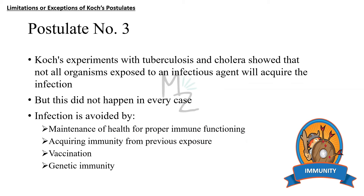Regarding postulate number three, Koch's experiments with tuberculosis and cholera showed that not all organisms exposed to an infectious agent will acquire the infection. Koch said that when a healthy individual is exposed to a pathogen isolated from culture, that individual will get the infection — but this did not happen in every case. The reason is that individuals may maintain their health through proper immune functioning, acquired immunity from previous exposure, vaccination, or genetic immunity.